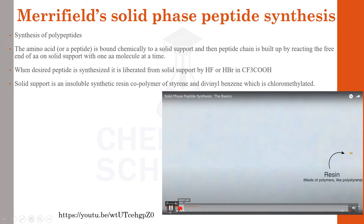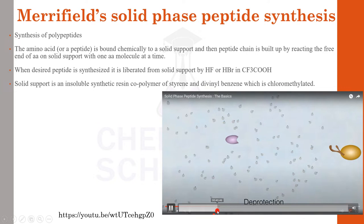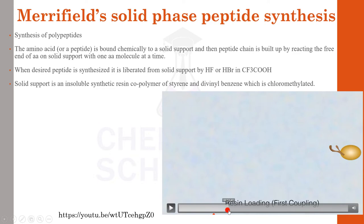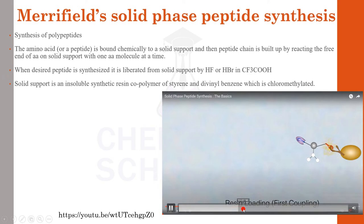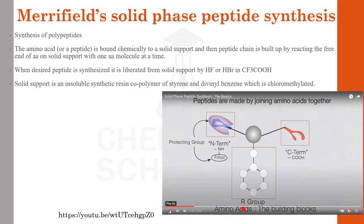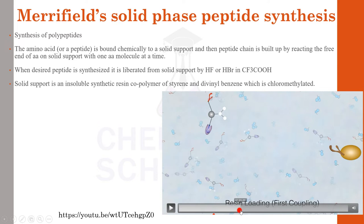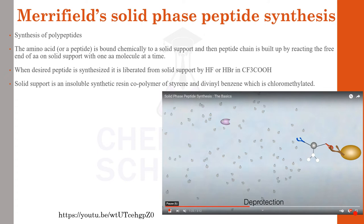In the animation, the resin swells in the solvent. A functional group attached to it is removed, and the first amino acid is loaded onto the resin — this step is called loading. The first amino acid reacts with the resin, which is your solid phase and stays throughout the reaction. Once that is done, the protecting group is de-protected.